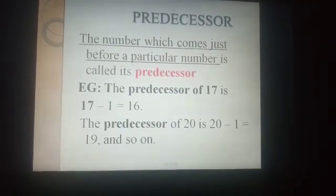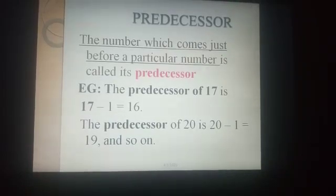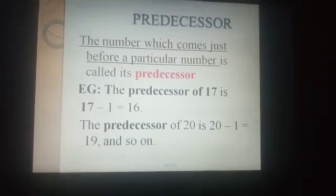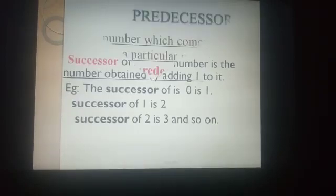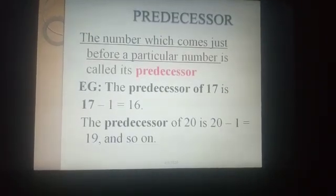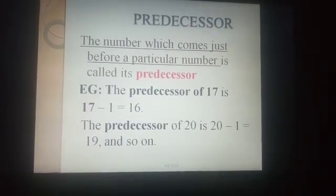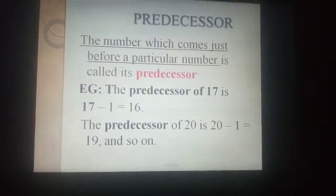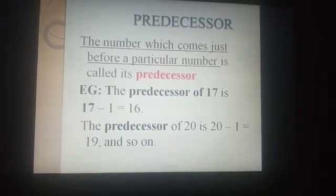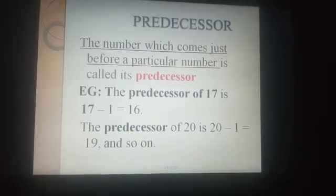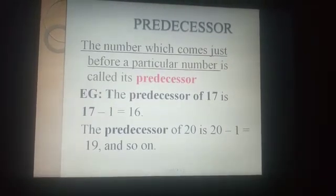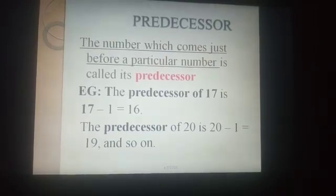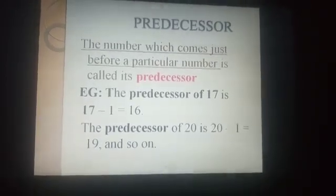Shall we move on? Predecessor. The number which comes just before a particular number is called a predecessor. Successor means adding 1 to a particular number; predecessor means subtracting 1 from a particular number. For example, the predecessor of 17 is 17 minus 1, which is 16. The predecessor of 20 is 20 minus 1, which is 19. What is the predecessor of 40? It is 40 minus 1, which is 39.